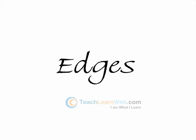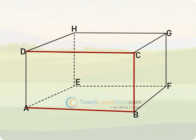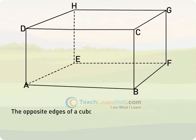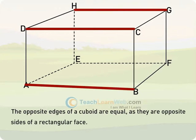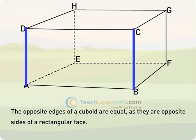A cuboid has 12 edges, namely AB, BC, DC, AD, EF, FG, HG, EH, AE, DH, BF, and CG. The opposite edges of a cuboid are equal, as they are opposite sides of a rectangular face. That is, AB = DC = HG = EF; AE = DH = CG = BF; and AD = BC = FG = EH.